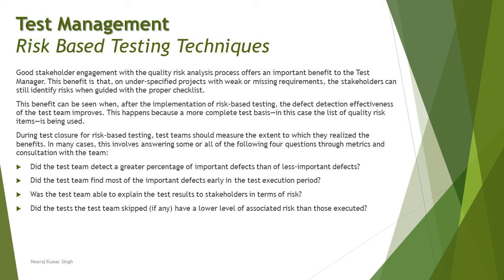The second question is: did the test team find most of the important defects early in the test execution period? That means the prioritization was more effective - your prioritization was very well aligned and you could find very critical defects much earlier in your lifecycle. The third question is: was the test team able to explain the test results to the stakeholders in terms of the risk? Like, when you execute certain test cases, how relevant was that outcome to the risk item which you identified in the same feature or functionality? The justification and explanation on that makes it really important.